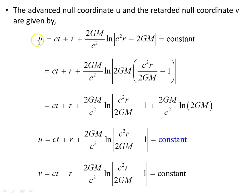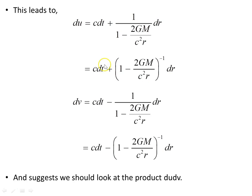The advanced null coordinate u and the retarded null coordinate v — as used in previous videos — each equal a constant. Rearranging by taking out a common factor of 2GM and using the laws of logarithms, we can absorb constants to get a new form for u and v. This leads to differentials: du = c dt + (a radial term), and dv = c dt + (a radial term with opposite sign).